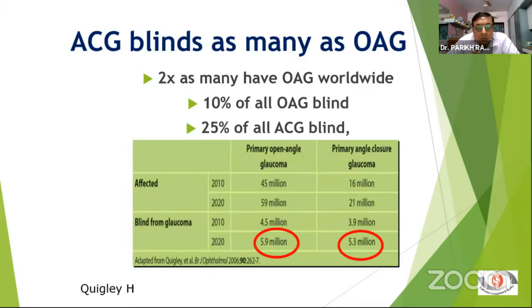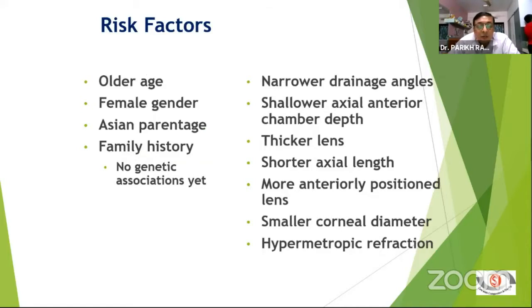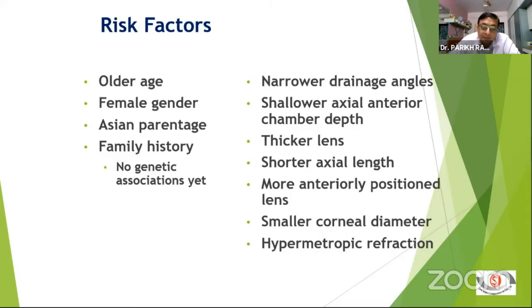Looking worldwide — Professor Quigley's data shows that angle closure is significantly less common than open angle glaucoma, but the blindness is more or less similar. The risk of blindness is two and a half times more than open angle glaucoma, and if you diagnose in the early stage, we can easily prevent blindness. Risk factors include older age, female sex, Asian ethnicity, family history. Ocular features include narrow angle, shallow axial chamber depth, thick lens, short axial length, and hyperopia.